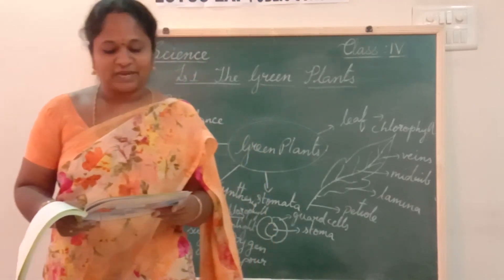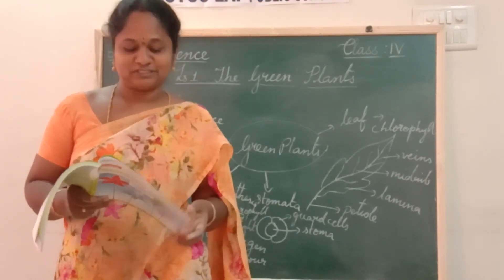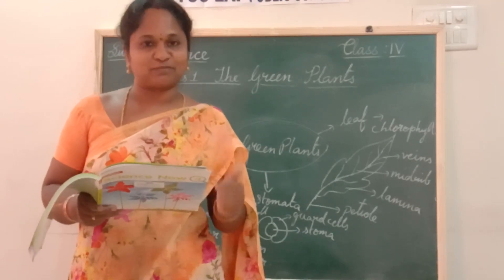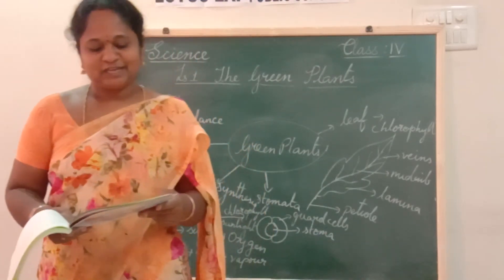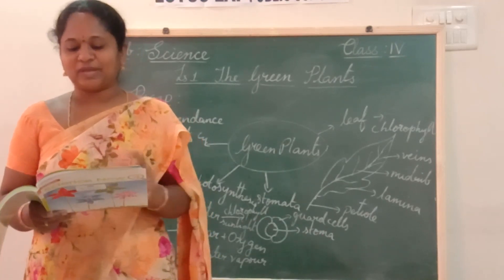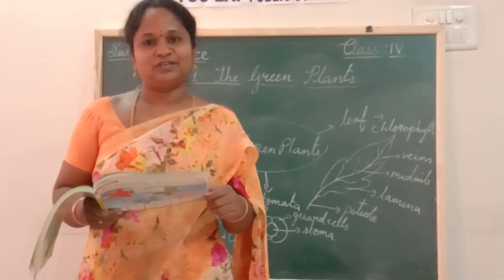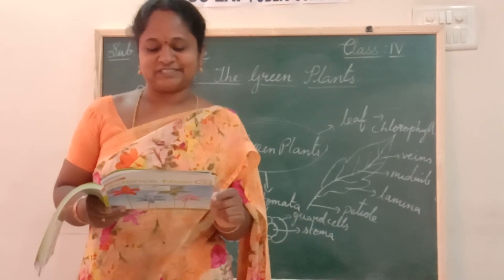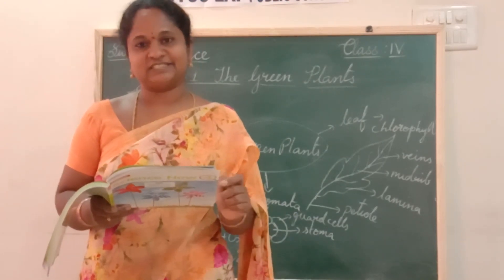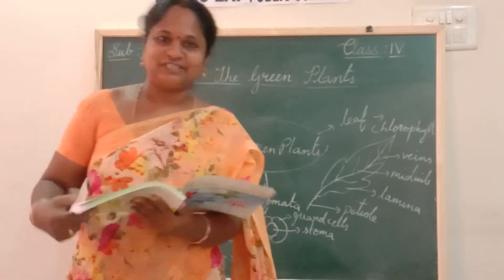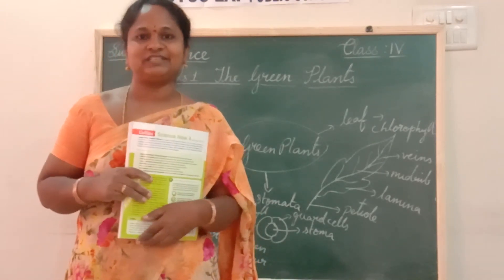Chlorophyll. Yes. Plants make their own food using carbon dioxide, sunlight, and water. Very good. Which of these substances do veins transport to and from the leaves? The options are: water, minerals, nutrients, or all of these. The answer is all of these. Very good, children. I think you have understood the lesson. Try to solve all the answers. Thank you, have a nice day.